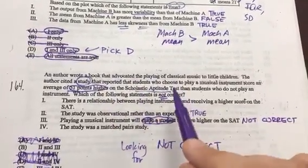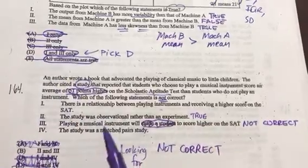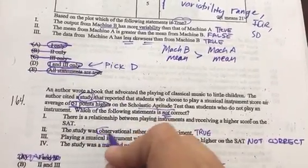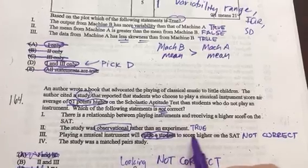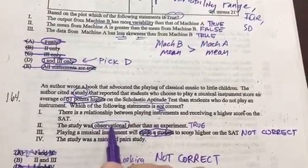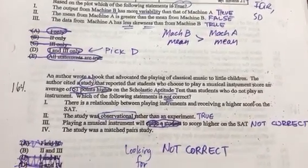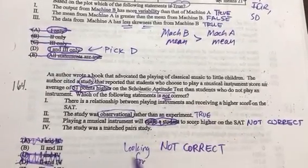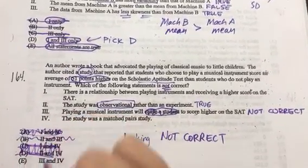It says the study was observational rather than experimental. I think this would be true. The students are choosing to play the musical instrument and they took a test, so all this is happening past tense. I did not give a treatment to these children. We're looking at this information after the fact—we look at their scores and decide whether or not the student plays an instrument. Definitely this is an observational study rather than an experiment, which also goes to this fact that we can't say causation when we're using information collected from an observational study. Since this is true and I'm only looking for not correct, I have to eliminate B.